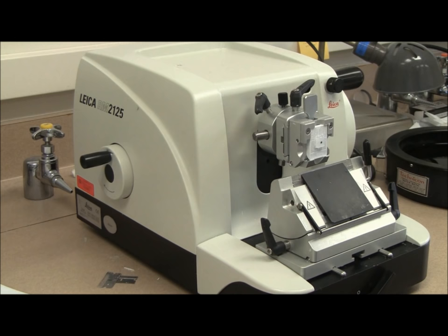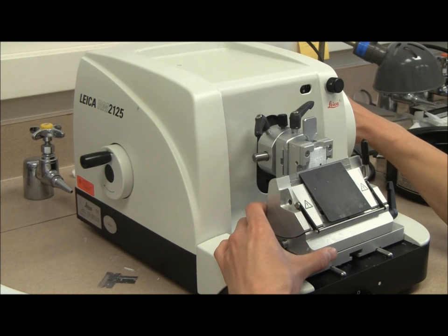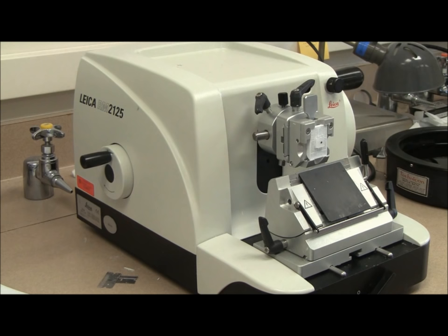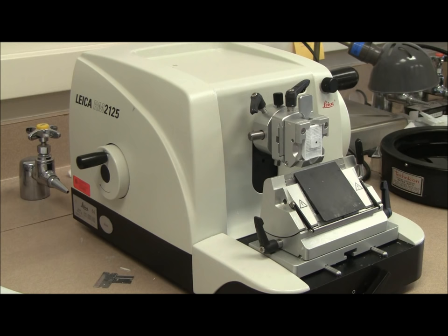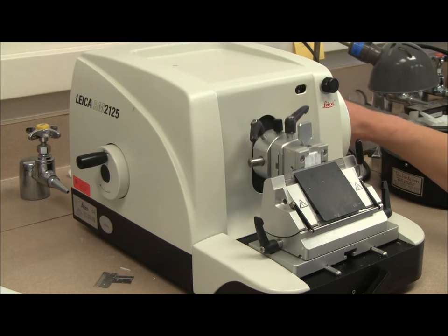Once your block is secured to the specimen clamp, adjust the knife holder to get the blade as close as possible to your block. This can also be accomplished by using the coarse feed wheel. Set the thickness indicator to 10 micrometers and begin cranking the hand wheel.